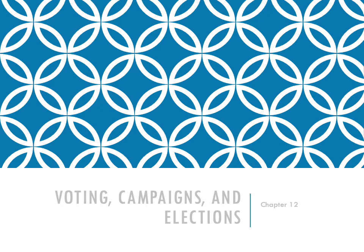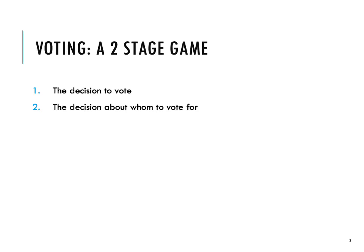This is Dr. Carly Schmidt with a lecture over Chapter 12 from our textbook. Today we'll be talking about voting, specifically voting behavior of American citizens. It's important to note that voting is a two-stage game. First, you have to make the decision that you're going to vote, and the second is the decision about whom you're going to vote for. The actual action has to precede the decision in terms of whom you're going to select on the ballot box.